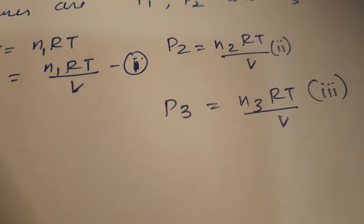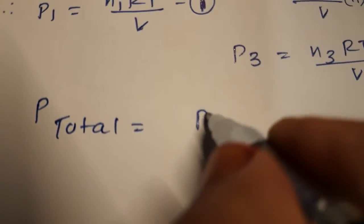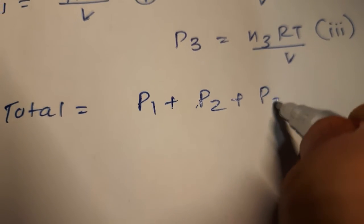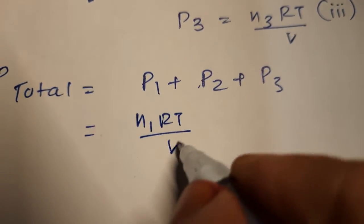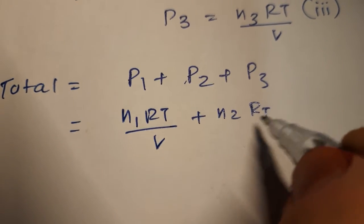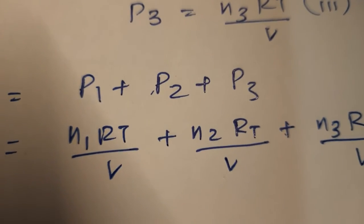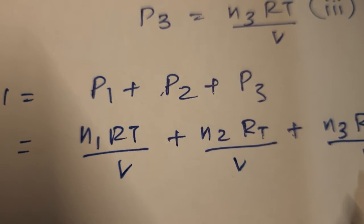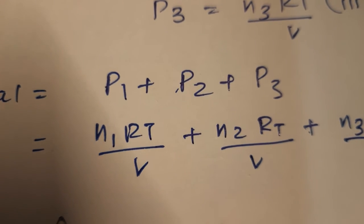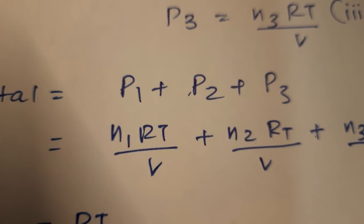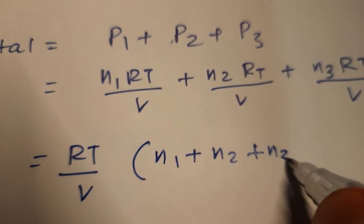So P total equals P1 plus P2 plus P3. Substituting: P total equals n1·RT/V plus n2·RT/V plus n3·RT/V. Taking RT upon V as common, P total equals RT upon V into (n1 plus n2 plus n3).